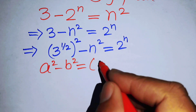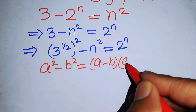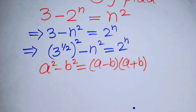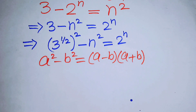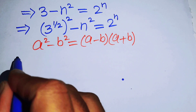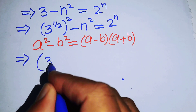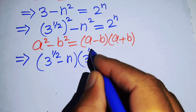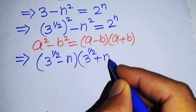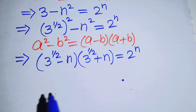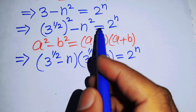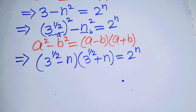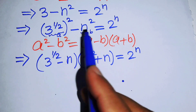You know that a squared minus b squared equals a minus b times a plus b. We will use this formula on the left hand side, so the left hand side becomes 3 to the power of 1/2 minus n, times 3 to the power of 1/2 plus n, and this whole equation equals 2 to the power of n. Here 3 to the power of 1/2 is the value of a and n is the value of b, so putting these values into the formula gives us this result.